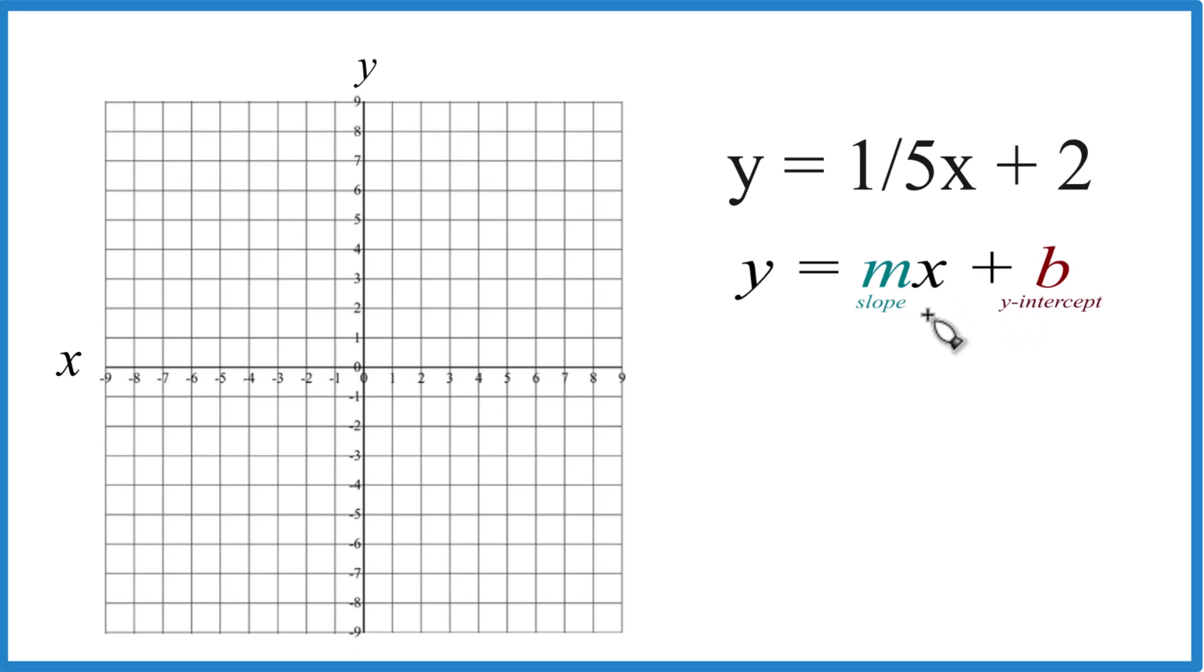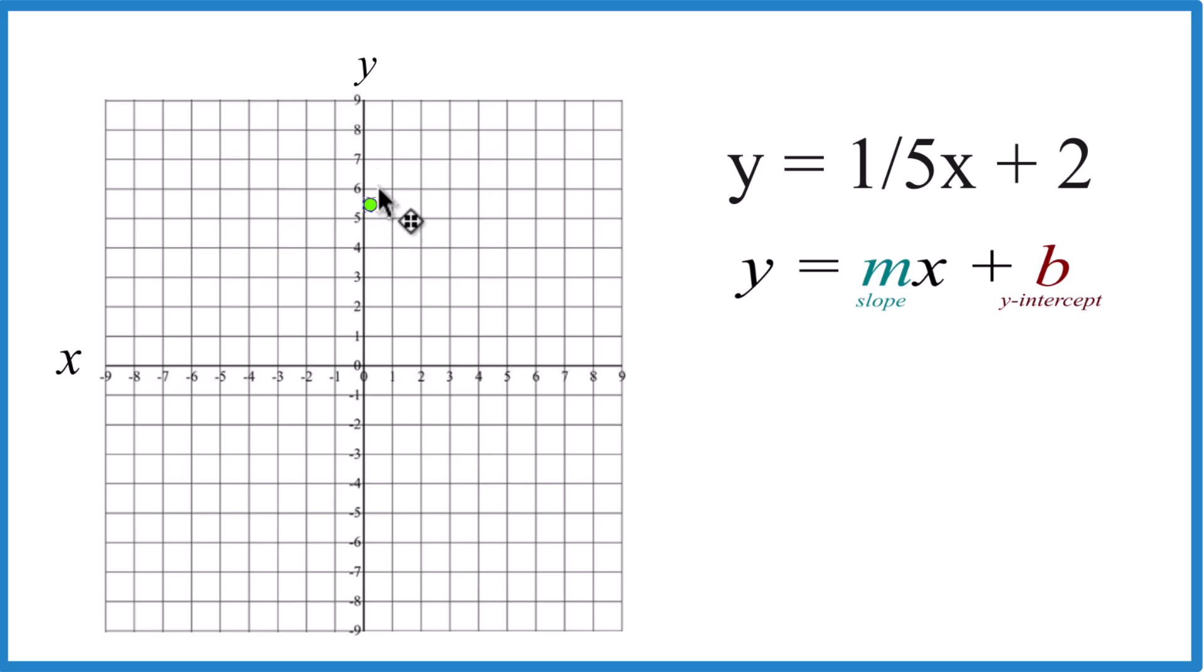Slope-intercept form, probably a little easier here, though. So we have y equals 1 fifth x plus 2. The y-intercept b, that's 2. So that's where we're going to cross the y-axis. So we just go to the y-axis here, 2. That's the y-intercept.